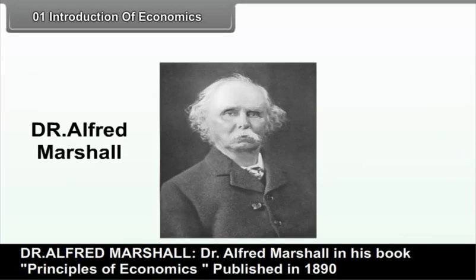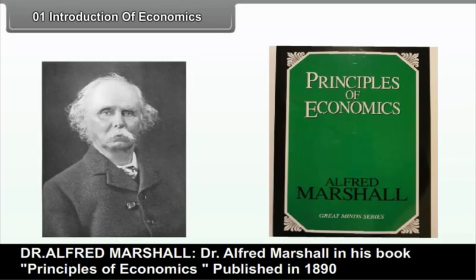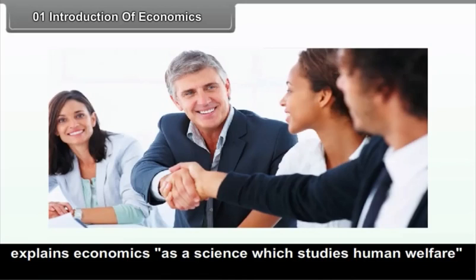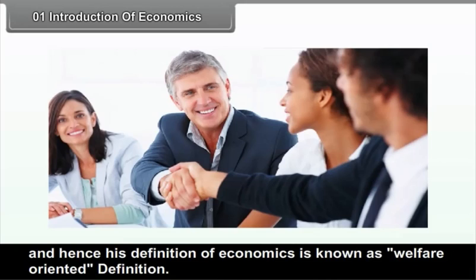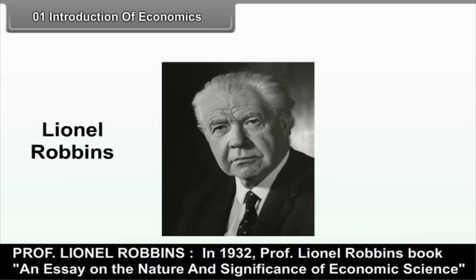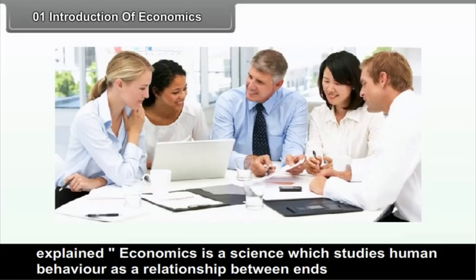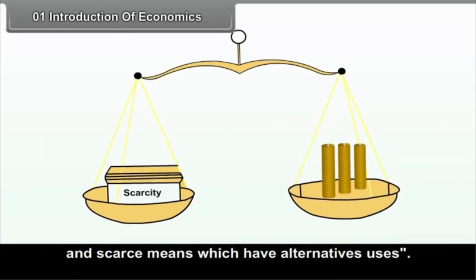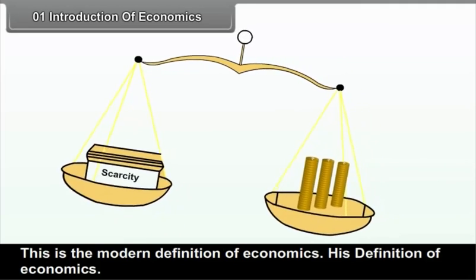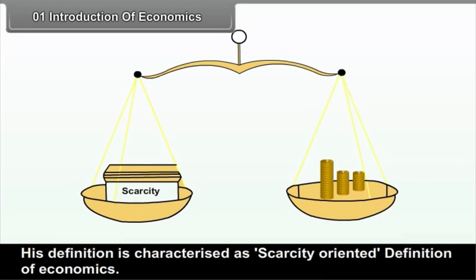Dr. Alfred Marshall, in his book 'Principles of Economics', published in 1890, explains economics as a science that studies human welfare. His definition of economics is known as the welfare-oriented definition. Professor Lionel Robbins, in 1932, in his book 'An Essay on the Nature and Significance of Economic Science', explained that economics is a science which studies human behaviour as a relationship between ends and scarce means which have alternative uses. This is the modern definition of economics, characterized as the scarcity-oriented definition of economics.